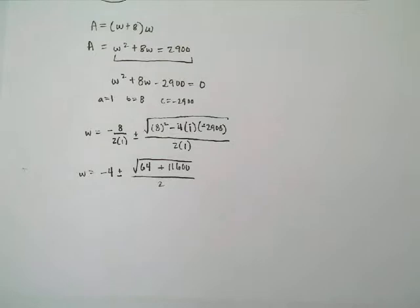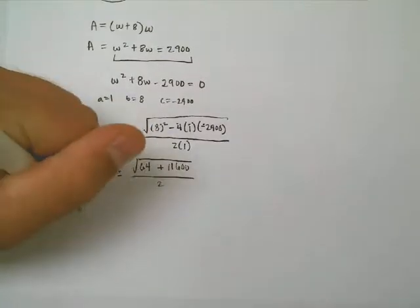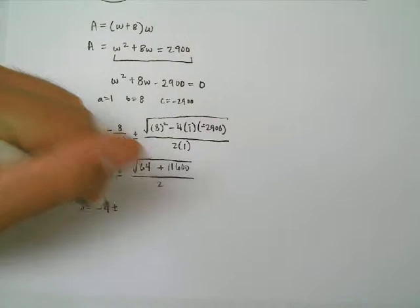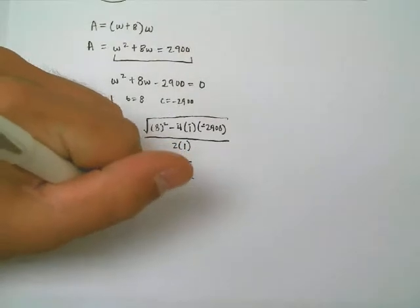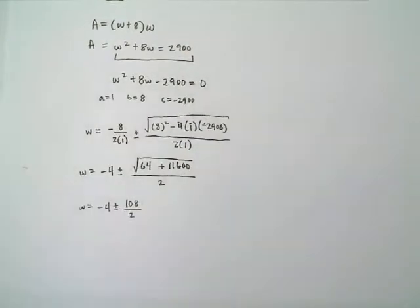Square root of 11,664 is, oh, in parentheses. Sorry, new calculator. It is 108. Negative 4 plus or minus 108 all over 2. But 108 over 2, we can do that too. That's actually just 54. Negative 4 plus or minus 54.